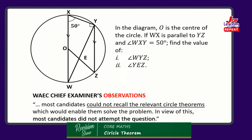Look at this problem on the board - question 9b, June 2014, from the West African Examinations Council. The chief examiner says most candidates could not recall the relevant circle theorems which would enable them to solve the problem. In view of this, most candidates did not attempt the question. That was a sad commentary - the question was demanding that we find angles WYZ and angle YEZ, but because it was question 9, an optional question, most candidates avoided it.